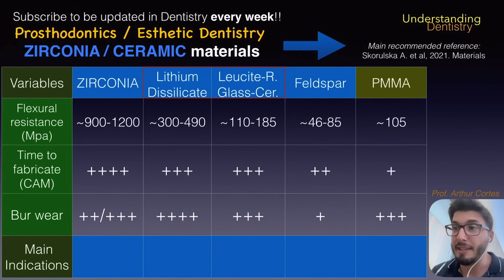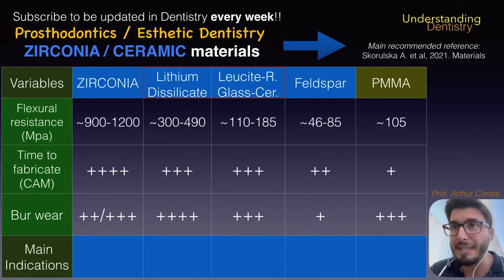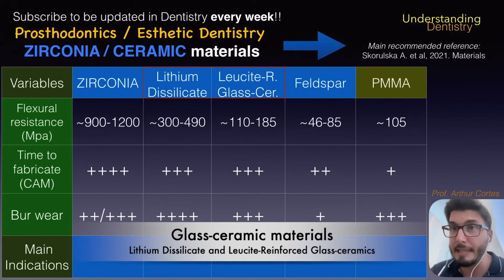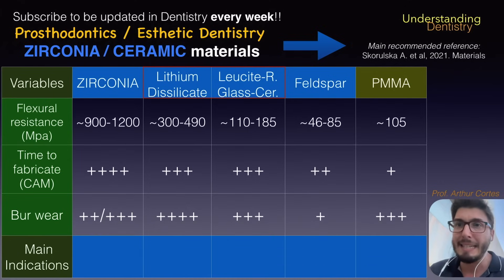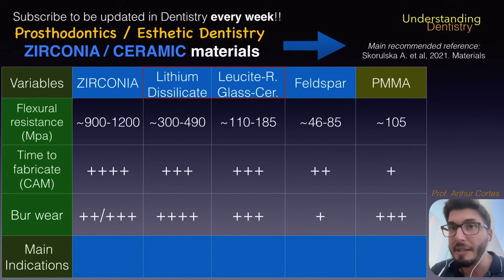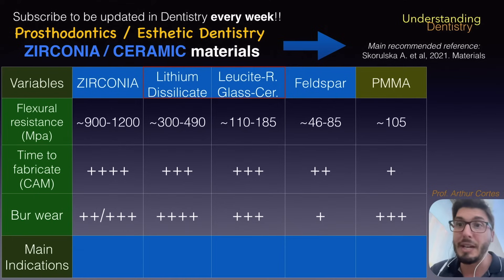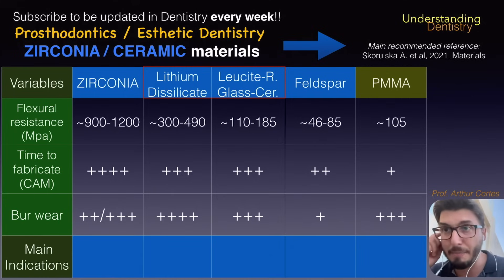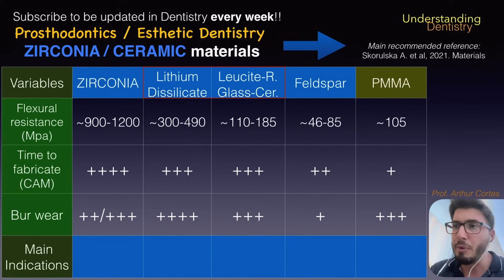The materials within the red frame are glass ceramic materials — lithium disilicate and leucite reinforced glass ceramics. Lithium disilicate, for example the Emax material, has much higher flexural resistance compared to the leucite reinforced glass ceramics, such as Empress. Then you have feldspar with much less flexural resistance, but usually with higher translucence.